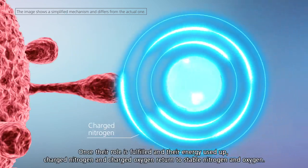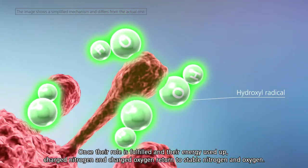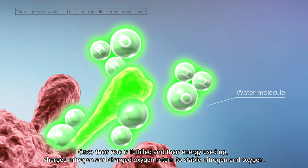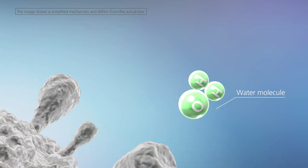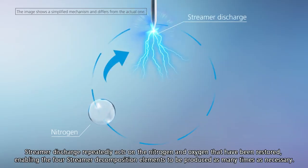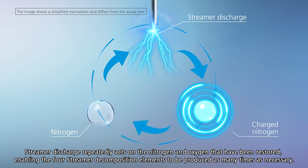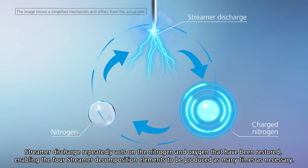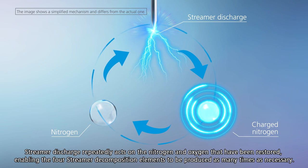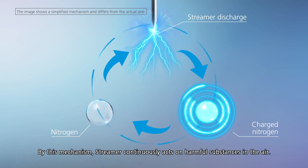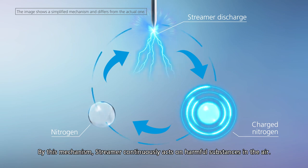Once their role is fulfilled and their energy used up, charged nitrogen and charged oxygen return to stable nitrogen and oxygen. Streamer discharge repeatedly acts on the nitrogen and oxygen that have been restored, enabling the four streamer decomposition elements to be produced as many times as necessary. By this mechanism, streamer continuously acts on harmful substances in the air.